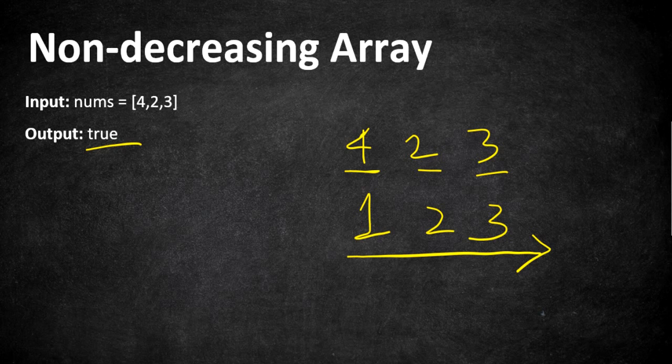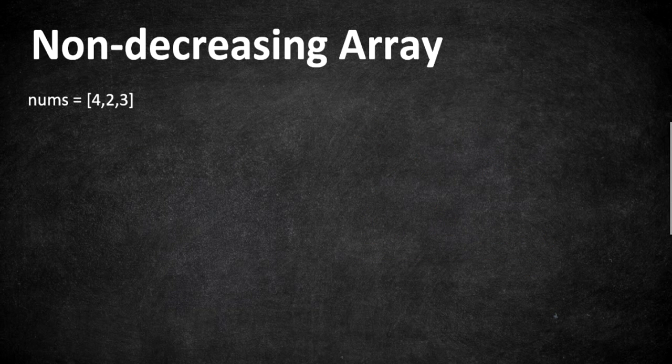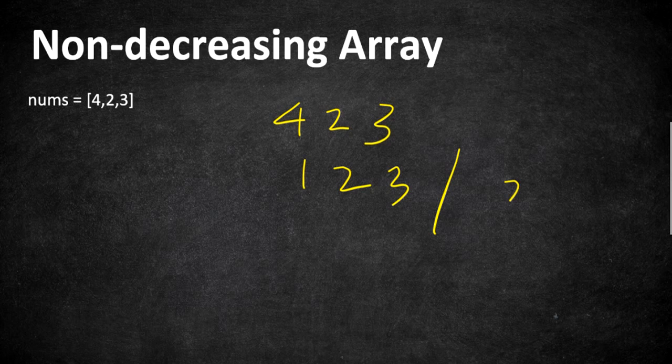So now how are we going to approach this? In our problem statement it is given that the array is said to be non-decreasing array if the numbers are either less than or equal to the next number.